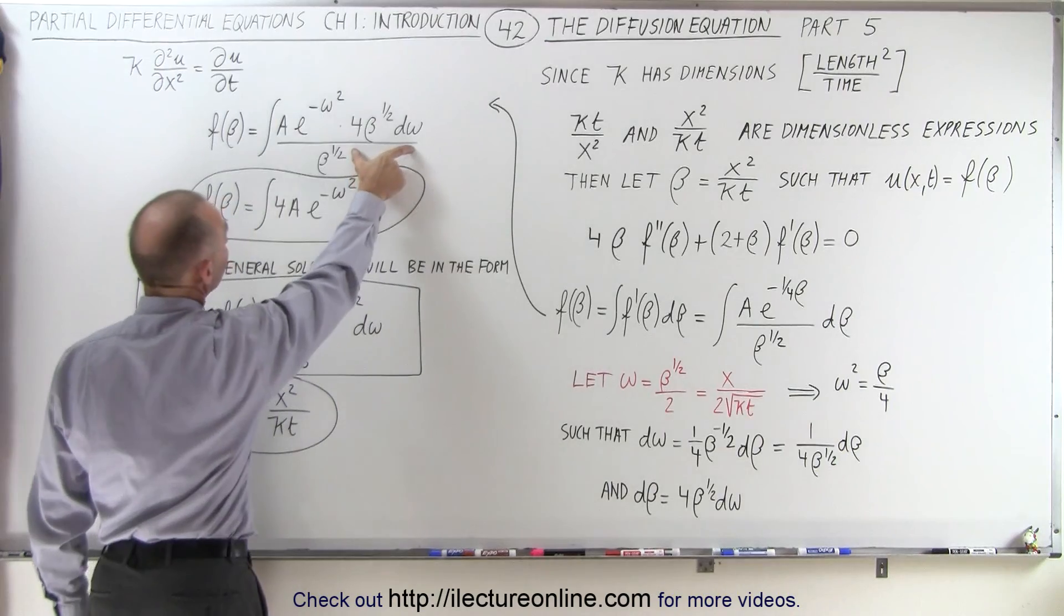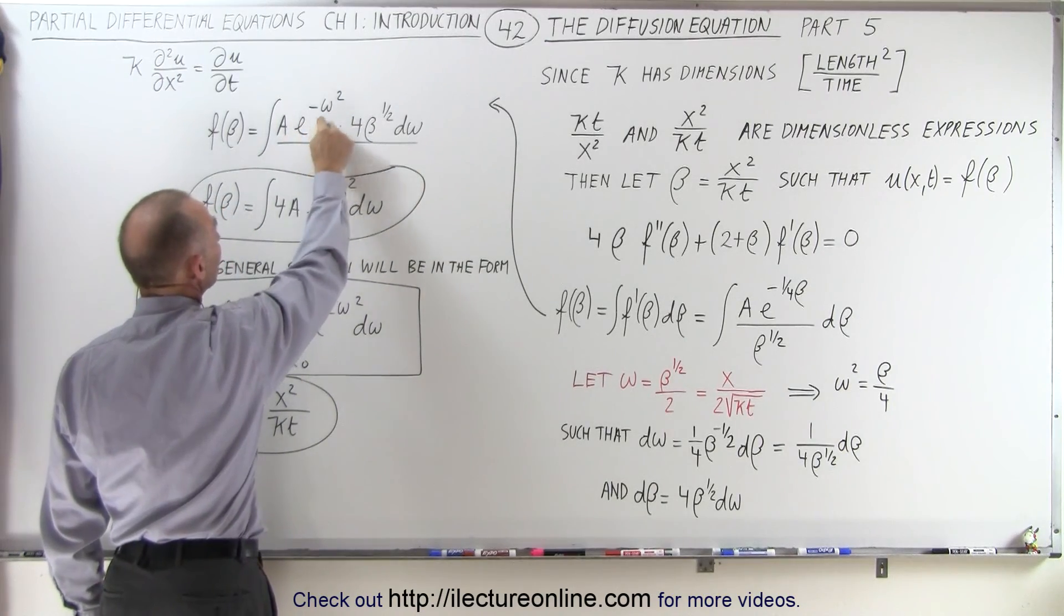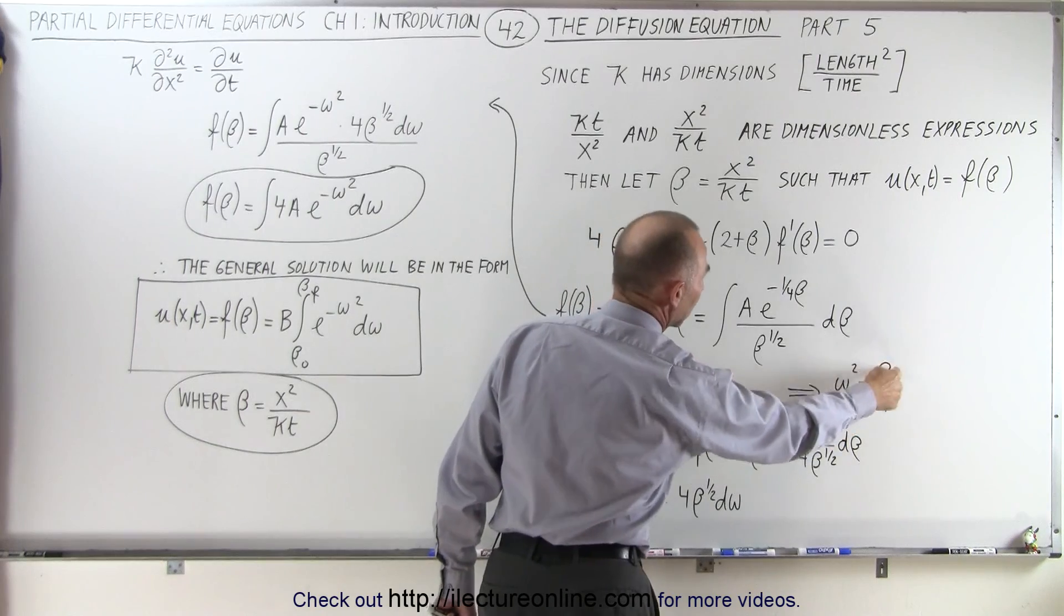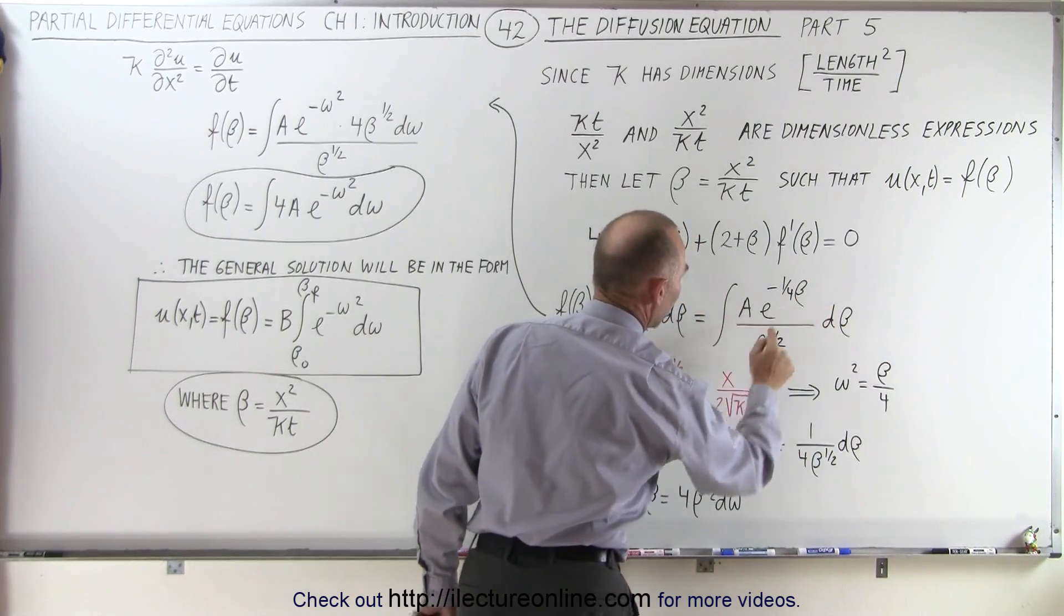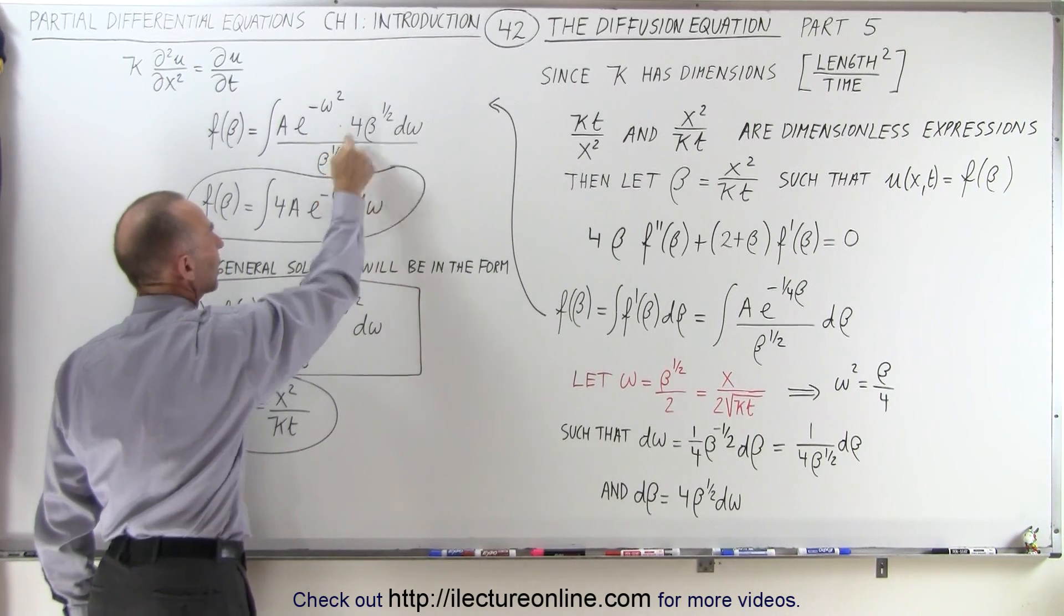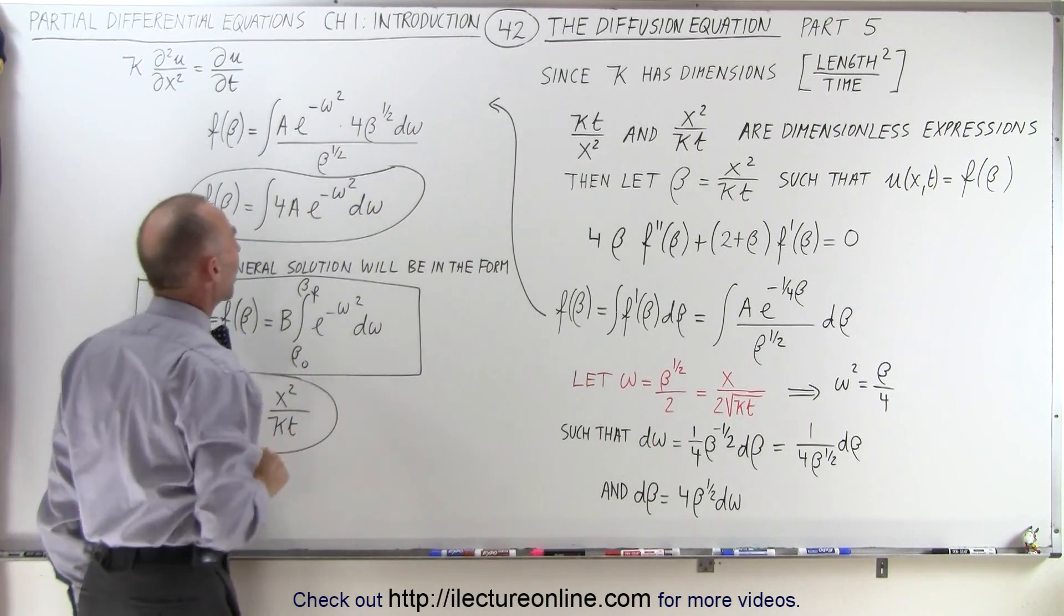We have a times e to the minus omega squared, because omega squared is beta divided by four, so beta divided by four can be replaced by omega squared over here. We still have the beta to the one half here, but that cancels out with this beta to the one half.